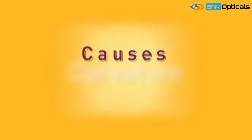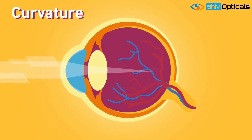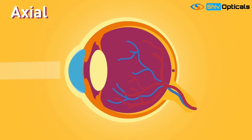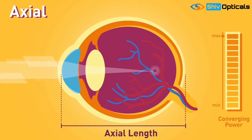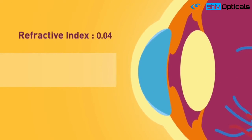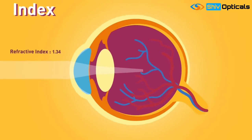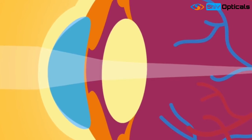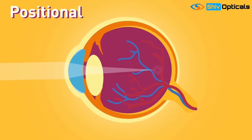Causes. Curvature: increase of curvature of the cornea or lens causes light rays to be focused in front of the retina, and hence myopia occurs. Axial: increase in axial length of the eye increases the converging power and causes light rays to be focused in front of the retina. Index: increase in refractive index — i.e. light bending or focusing power — of the lens, for example in cataract. Positional: anterior displacement of the lens, e.g. after trauma, again causes light rays to be focused in front of the retina.